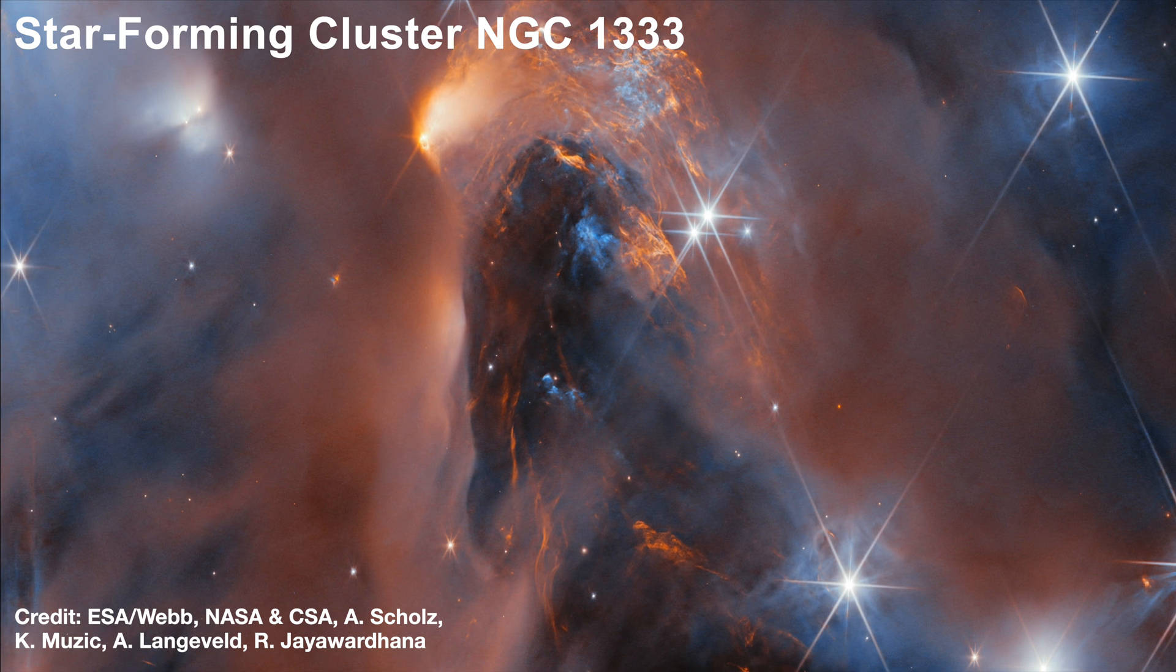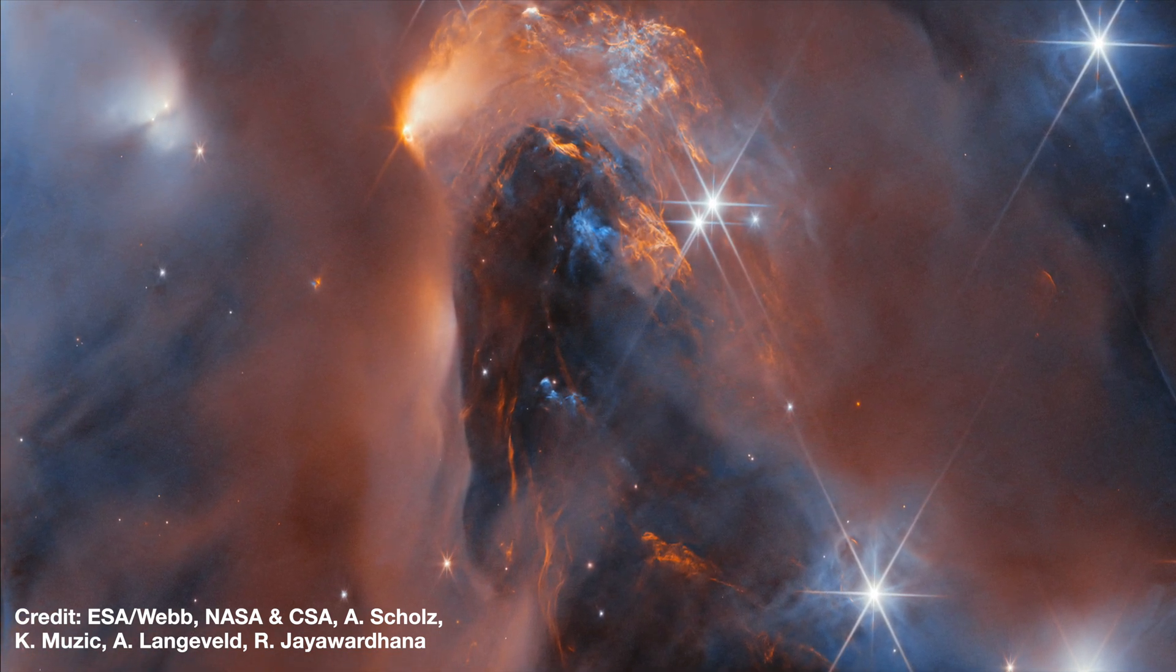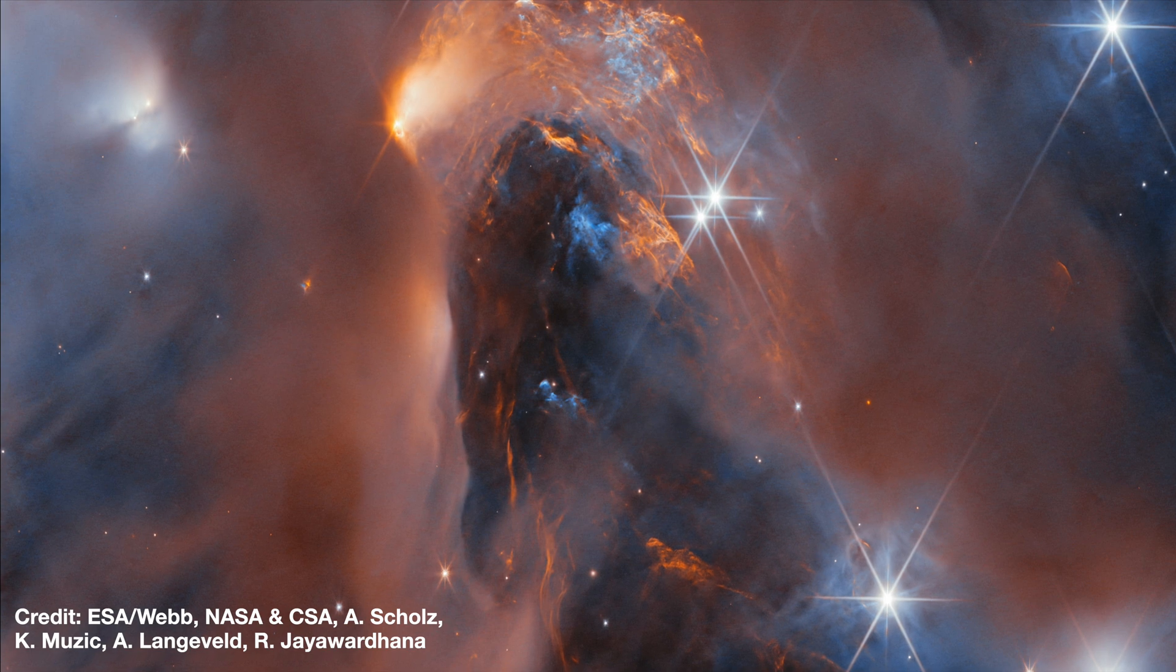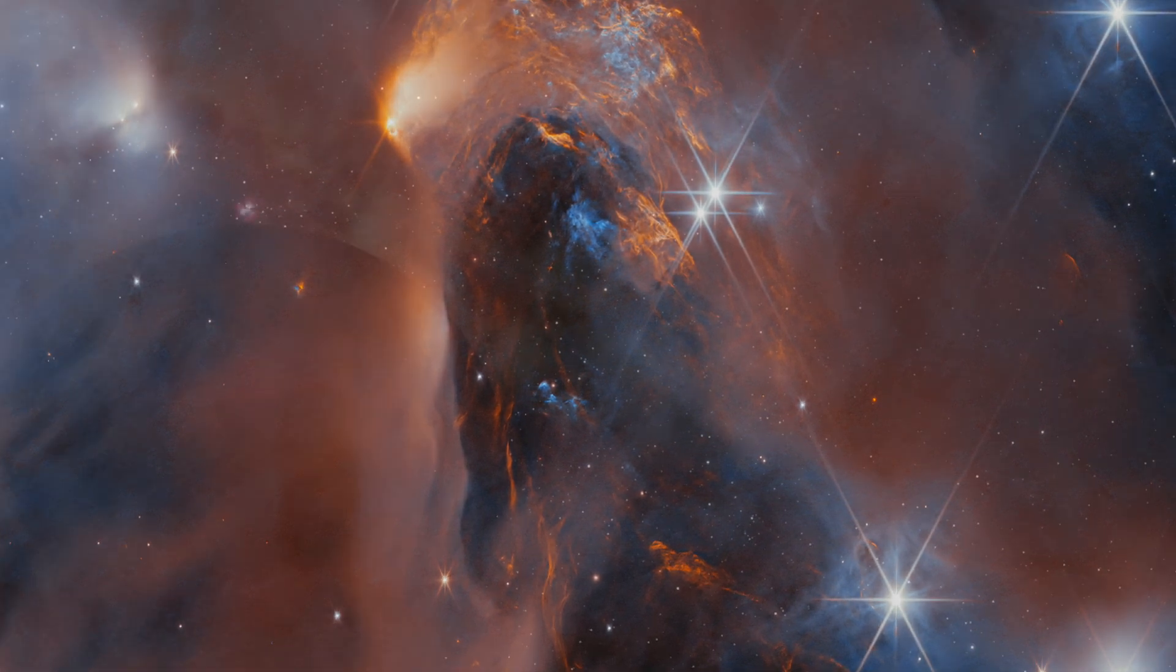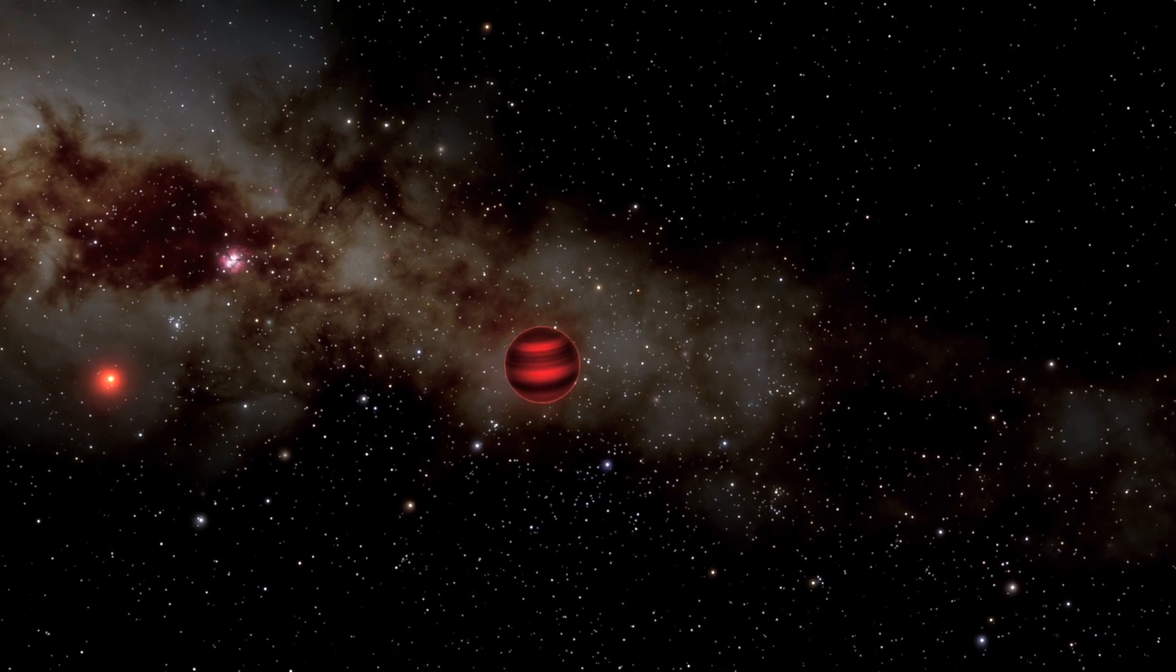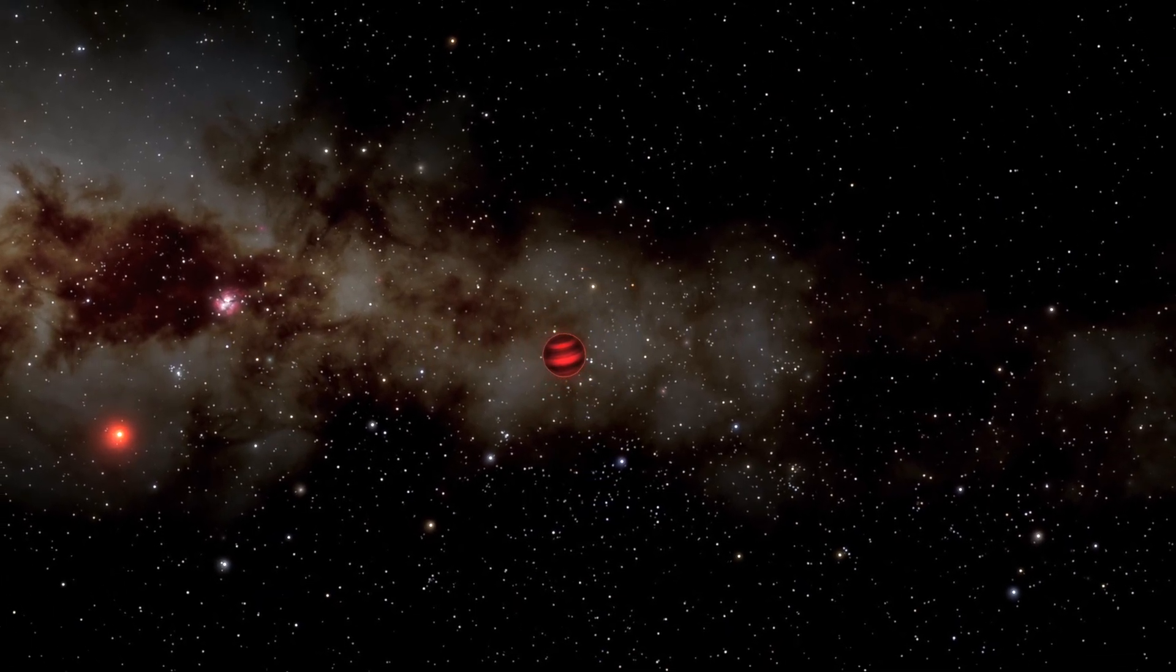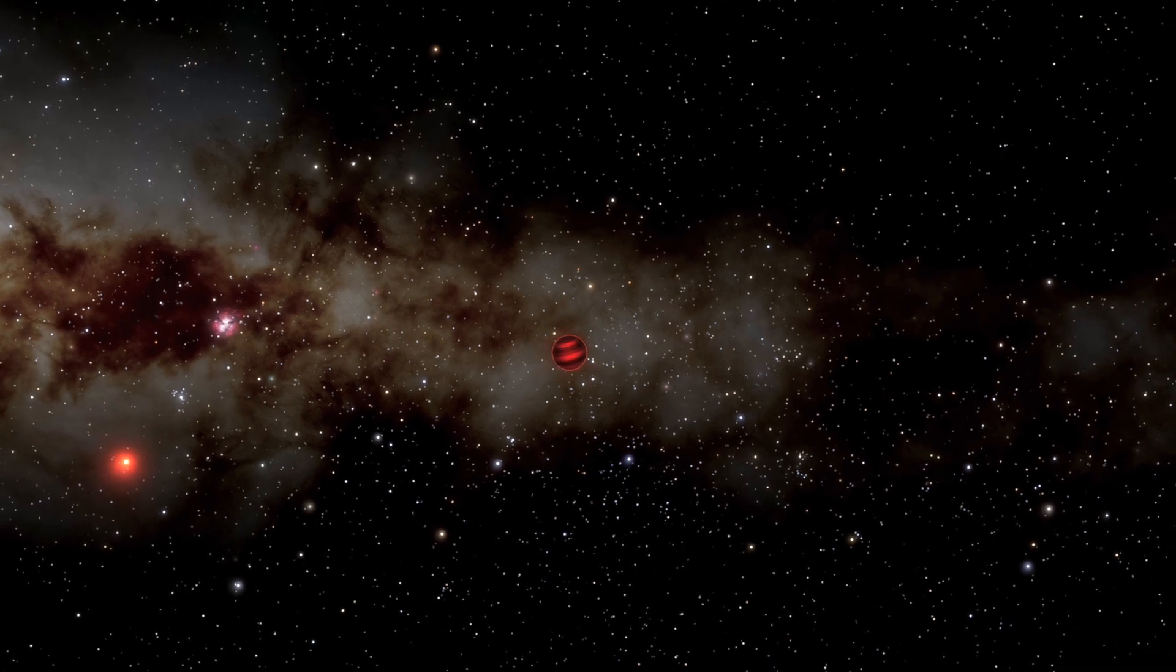In the chaos of a dense birth cluster, binaries can be torn apart before planets even form. Nemesis may never have been a lurking destroyer on a vast orbit. It could have been something far more subtle, a twin that shaped the solar system's infancy, then drifted away lost to the galaxy billions of years ago.